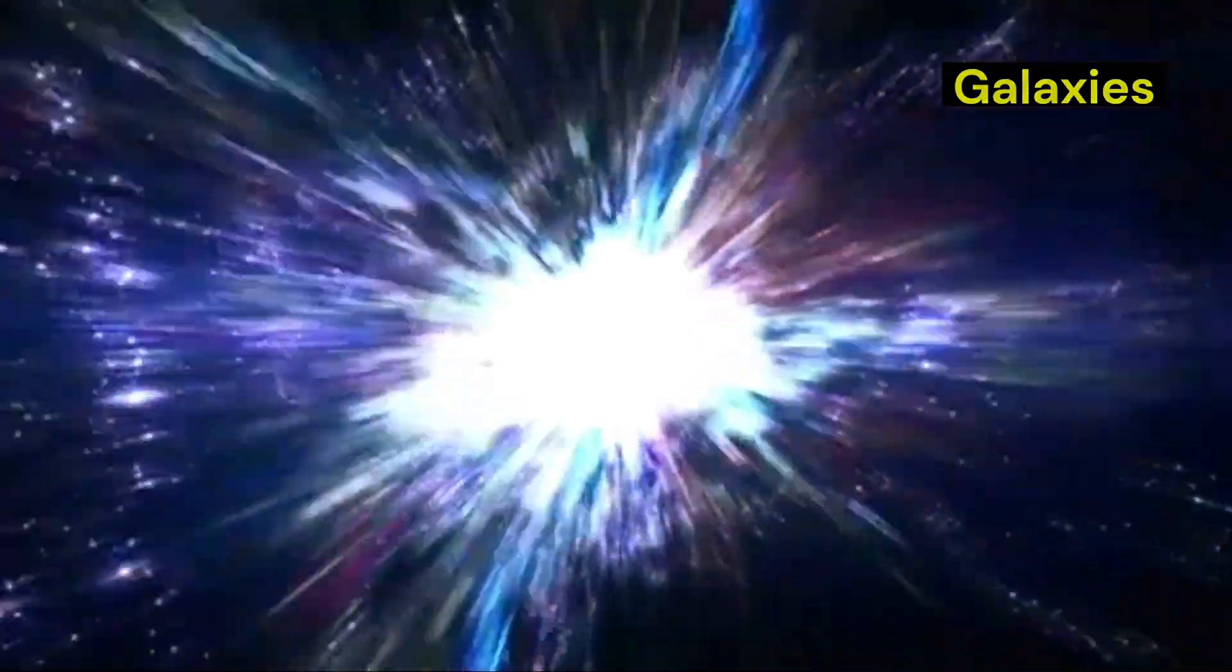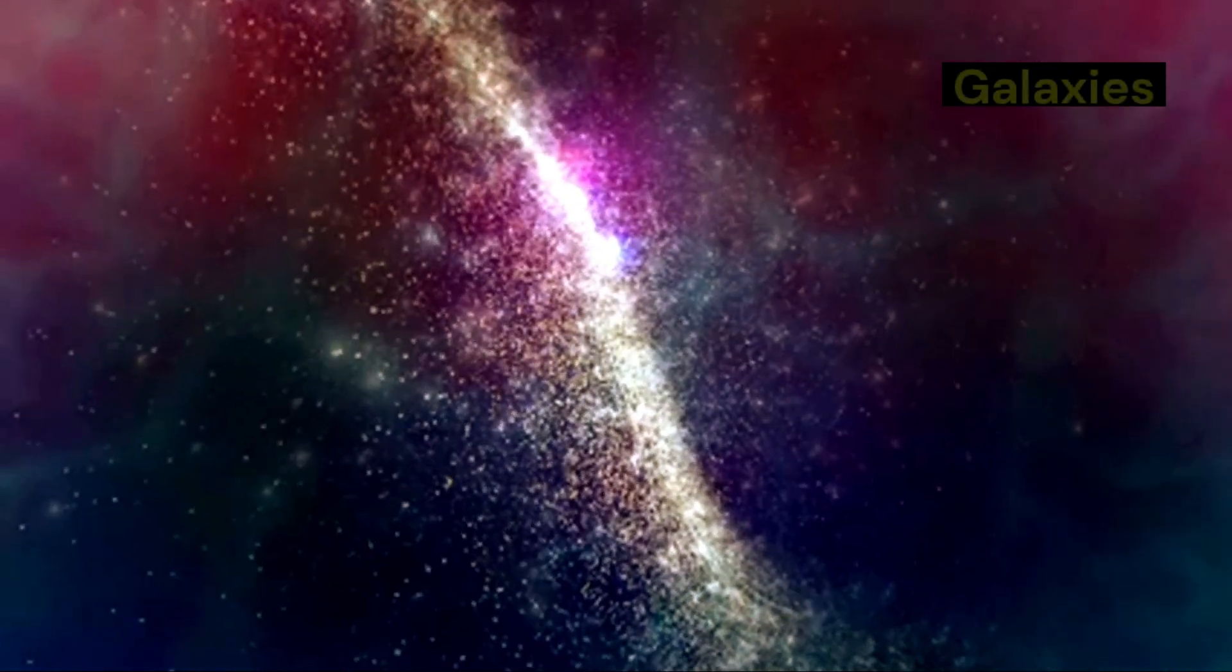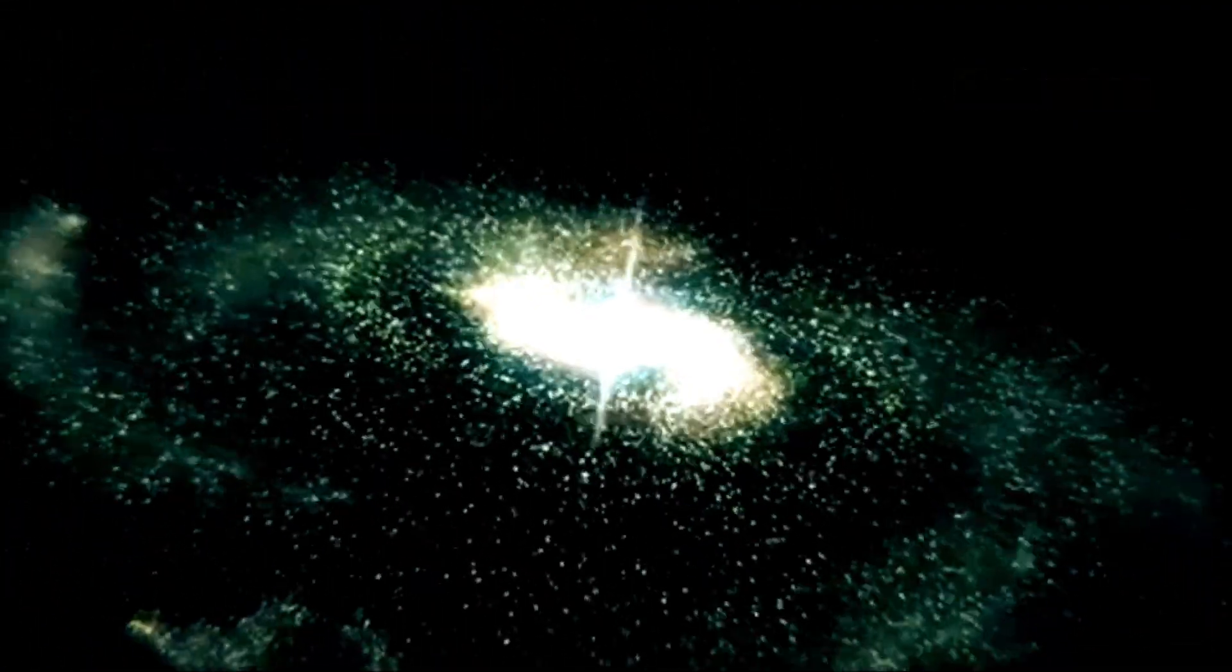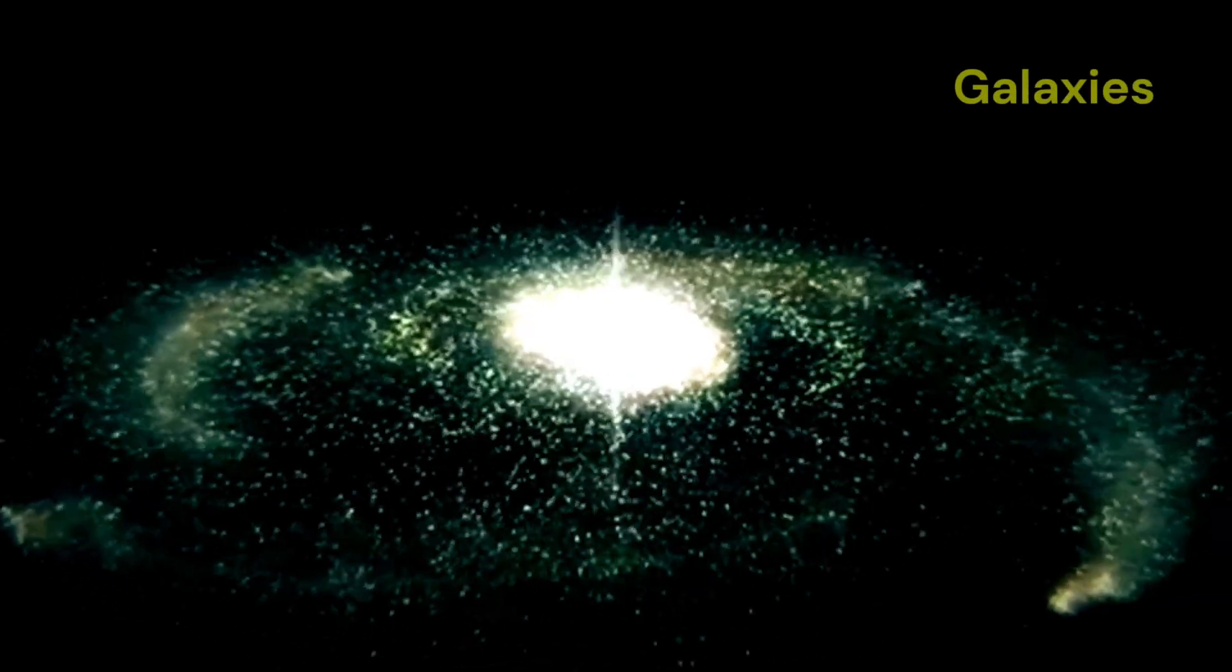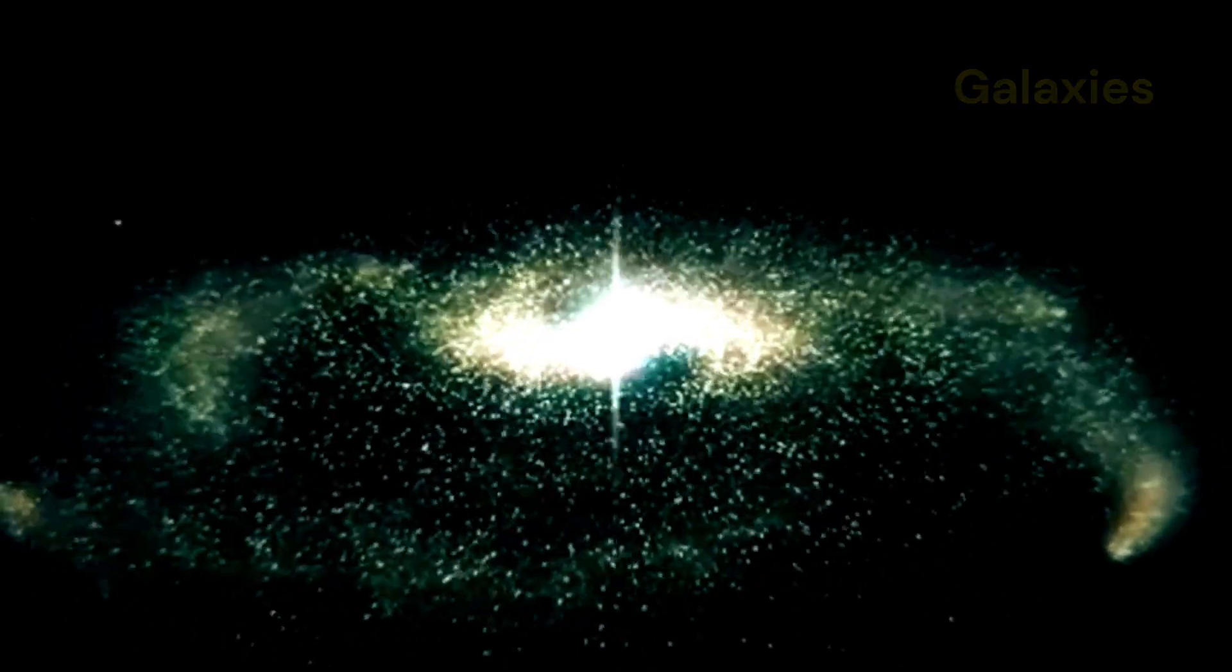Imagine baking a loaf of raisin bread. As the dough rises, the raisins move further apart from each other. Similarly, the expansion of the universe causes galaxies to move apart. This expansion is a fundamental property of the universe and has profound implications for our understanding of its origin and evolution. It also introduces a limit to how far we can see into the cosmos, known as the Hubble Sphere. This sphere represents the boundary beyond which galaxies are moving away from us faster than the speed of light. Light from these distant galaxies may never reach us, effectively creating a horizon for our observations.